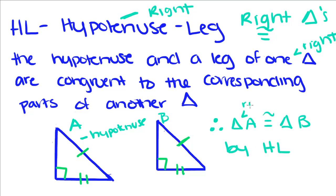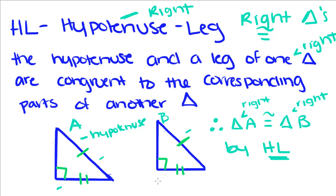HL only works for right triangles. If you think about it, right angles are always congruent to one another because right angles always measure 90 degrees. So you effectively have a side, an angle, and a side.